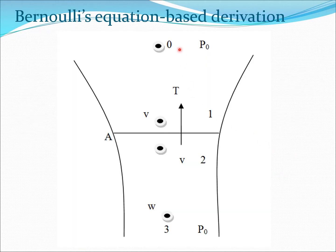So if we look at this flow field now, we see that the pressure here is p0, here is p1, here is p2, and here again it is p0.